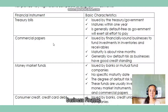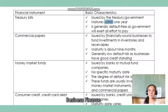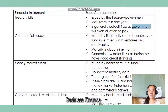What are the examples of money market instruments? The first one is treasury bills. Treasury bills are issued by the treasury or the government and they mature within one year, which is why they are included in the money market instruments — it's a short period. They are generally default-free, meaning there's no risk. You don't have to worry about getting your money back because this is backed up by government funds.